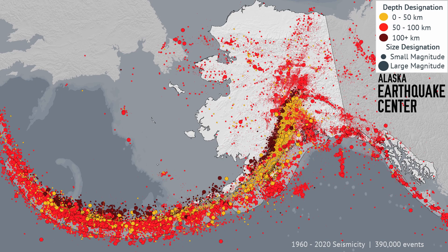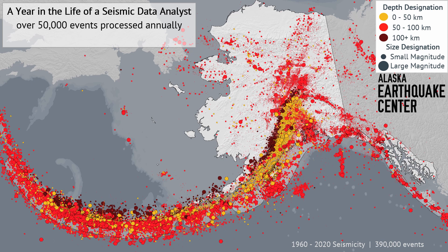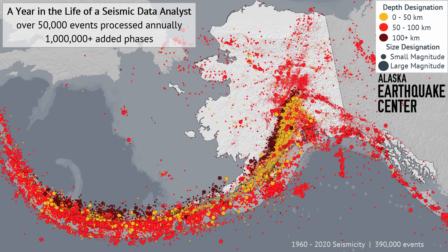Congratulations! You've just helped process a small earthquake in interior Alaska. But as you're aware, Alaska is quite seismically active. This is a map of seismicity from 1960 to 2020, and it includes 390,000 individual events. So if a day in the life of a seismic data analyst includes an eight-hour time segment with potentially 42 automatically detected events, a year in the life includes over 50,000 events processed annually, equating to over 1 million added phase arrivals. I hope you've enjoyed this behind-the-scenes look at earthquake processing — and don't forget to let us know if you felt an earthquake near you with a Did You Feel It report.